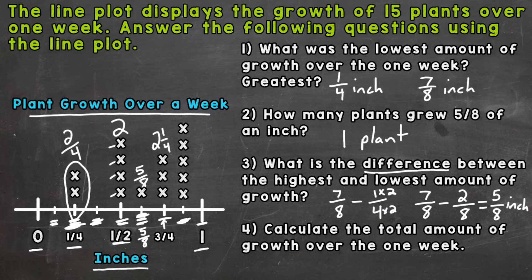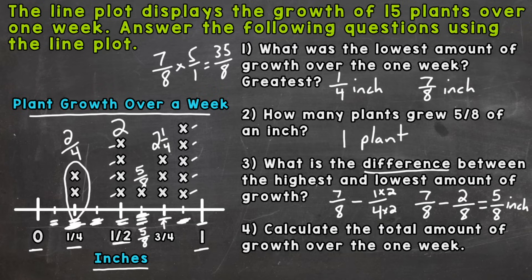And then lastly, we have seven eighths, and we have five groups of seven eighths — five plants that grew seven eighths of an inch. So we need to do seven eighths times five, which gives us 35 over eight. Now we need to get out of that improper fraction. How many whole eights out of 35? Four — that gets us to 32, with three left over out of eight. So that's four and three eighths. Now we have all the growths listed and need to add them up.